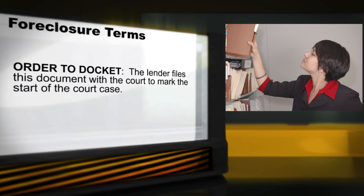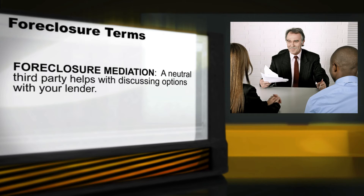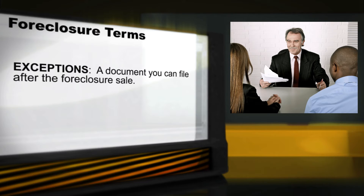An order to docket is the document that the lender files with the court stating that the lender intends to foreclose on your house. This is the start of the court case for foreclosure. The lender is required to send you a copy. You have the right to request foreclosure mediation. A trained mediator is a third-party, neutral person who does not represent you or the lender. The mediator will help you discuss options with your lender.